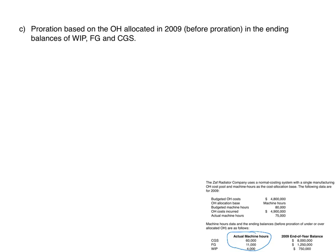We multiply $60 per machine hour by 60,000 hours for cost of goods sold, giving $3,600,000. Multiplying by 11,000 hours for finished goods gives $660,000. Multiplying by 4,000 hours for work in process gives $240,000. All three of these should add up to the $4,500,000 total applied overhead allocated to the jobs.